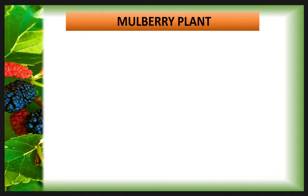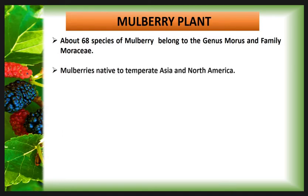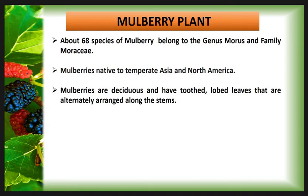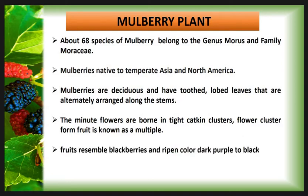There are about 68 species of mulberry, belonging to the genus Morus and family Moraceae. Mulberry plants produce sweet edible fruits and are native to temperate Asia and North America. Several species are cultivated for their fruits and as ornamentals. Mulberries are deciduous with toothed leaves, sometimes lobed, arranged alternately along the stem. The minor flowers are borne in tight catkin clusters, and each fruit develops from an entire flower cluster, commonly known as a multiple fruit.